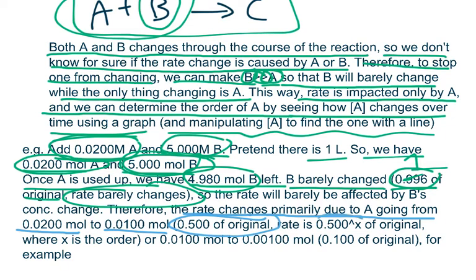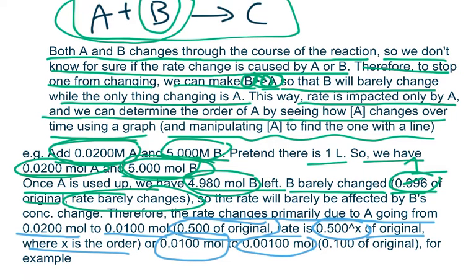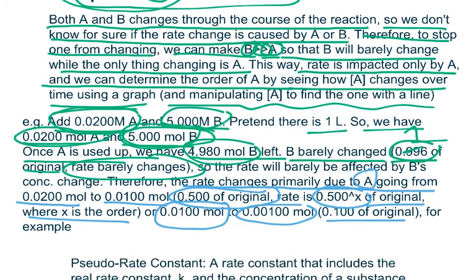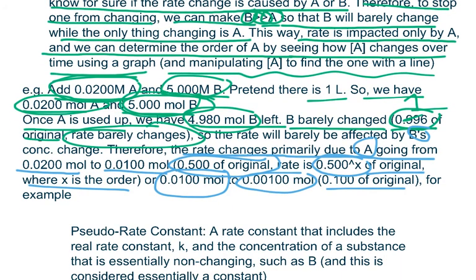So the rate barely changes — it might change by a factor of 0.996, but that is so close to 1 that you can essentially assume it is not going to change, since anything multiplied by 1 stays the same. Because the concentration of B essentially stays constant, the rate change is primarily due to A going from, for example, 0.02 moles to 0.01 moles, which is 0.5 of the original. So the rate will be 0.5 to the x of the original, where x is the order. Or perhaps A might go from 0.01 to 0.001 — that's 10% of the original — so the rate might be 10% of the original as well. This shows how changing A can decrease the rate by a lot, while changing B does essentially nothing. So B is effectively a constant.